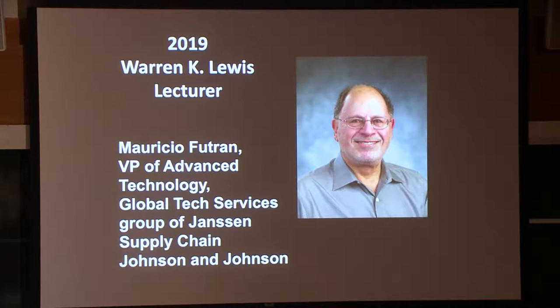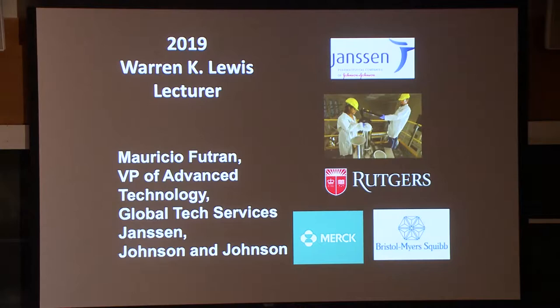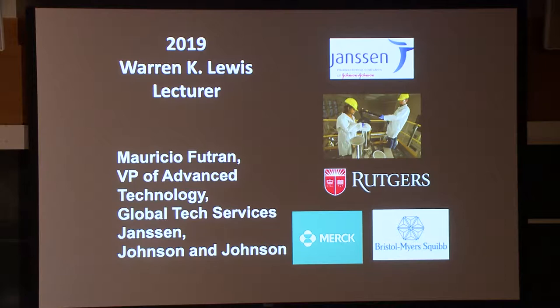The ultimate goal is model predictive control and real-time release. Dr. Futran spent 28 years in various positions in pharma, product and process development at Merck & Company, Bristol-Myers Squibb, where he was Vice President of Process R&D. He then joined Rutgers University and served as its department chair before moving to J&J. Professor Futran is a member of the National Academy of Engineering. He also served as its chair for the Chemical Engineering section and on its peer committee.